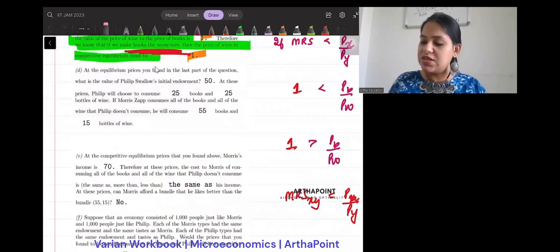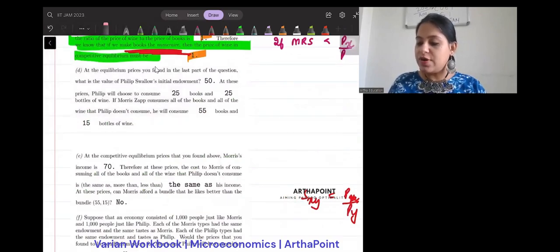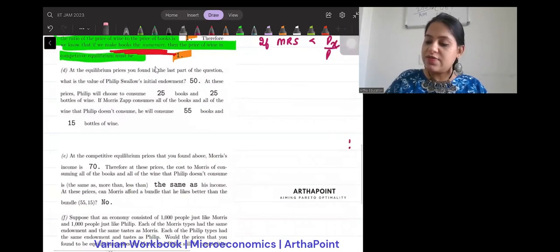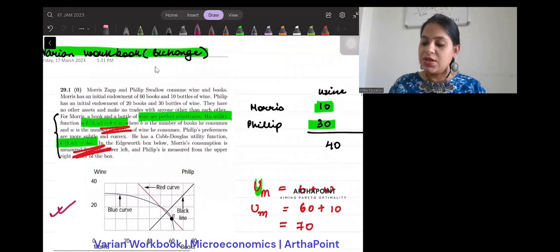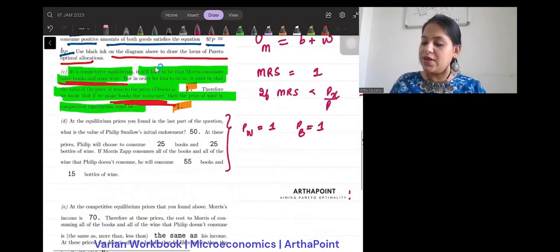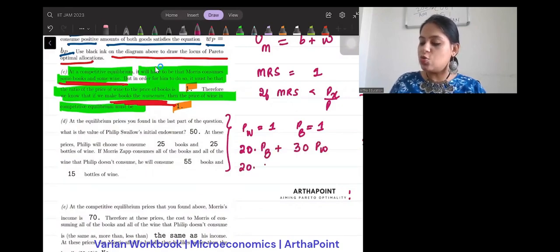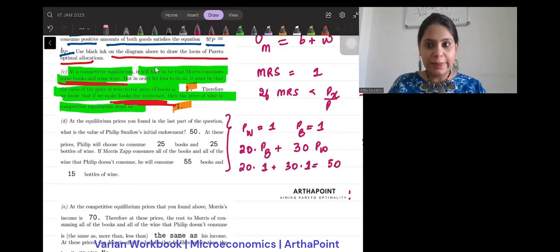It says, at the equilibrium price you found in the last part of the question, which means the equilibrium price that we had found out, it was that price of wine was also one and price of book was also one. It says, what is the value of Philip Swallow's initial endowment? So, if you go back to his endowment bundle, the endowment bundle of Philip was 20 books and 30 bottles of wine. So, if I just go ahead and do this, 20 P_B plus 30 P_W. So, this is going to be 20 into 1 plus 30 into 1 and this is going to give you 50. So, we see that the value of his initial endowment is going to be 50 and that's the answer to this question.